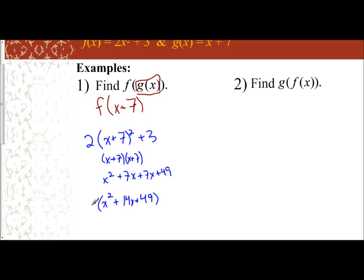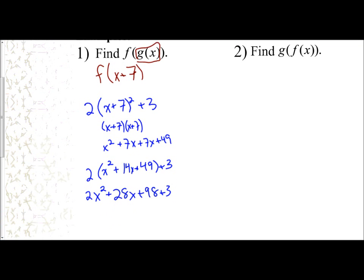I still need to distribute the 2 from above and add the 3. So I get 2x² + 28x + 98, and then adding 3 gives a final answer of 2x² + 28x + 101.